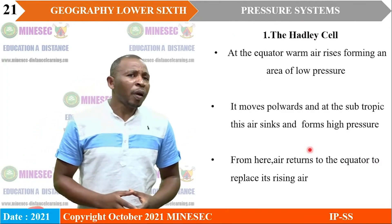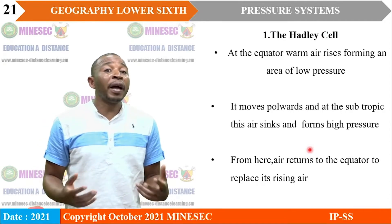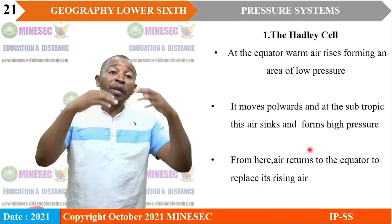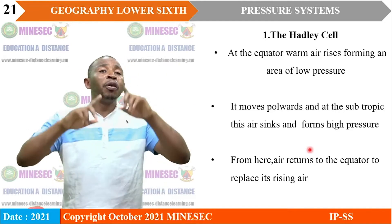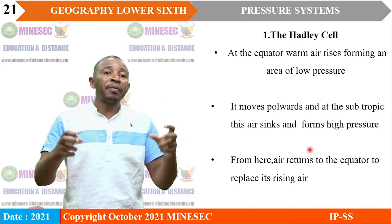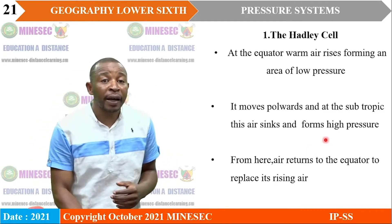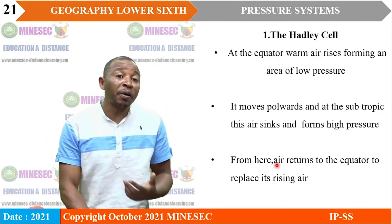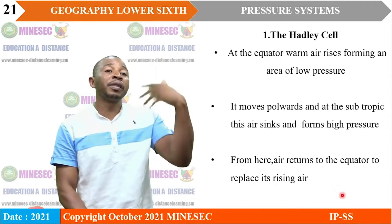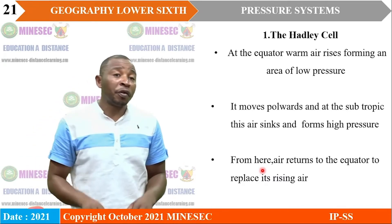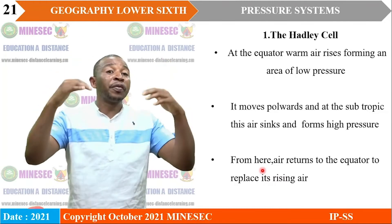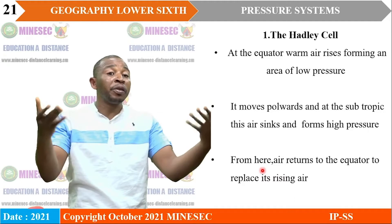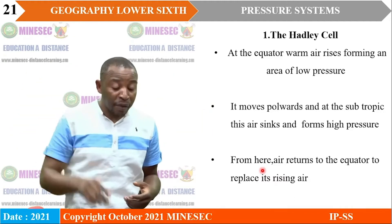The Hadley Cell is found at the equator, where warm air rises, forming an area of low pressure. As it reaches the higher atmosphere, it moves horizontally forward, cools, becomes heavier, and sinks, forming a high-pressure belt. When it descends to the surface, it moves horizontally back toward the equator to replace the rising air, and the process continues — warm air rises, reaches the atmosphere, moves forward, cools, descends, then moves back along the surface toward the equator.